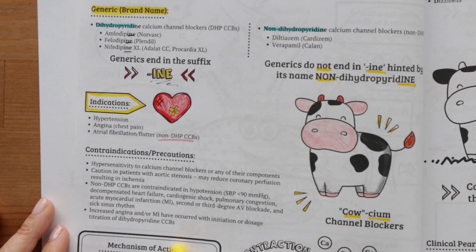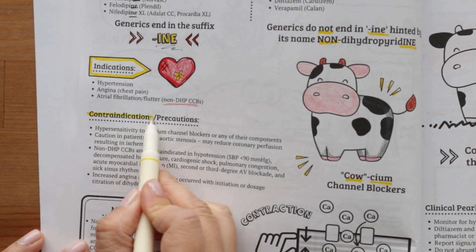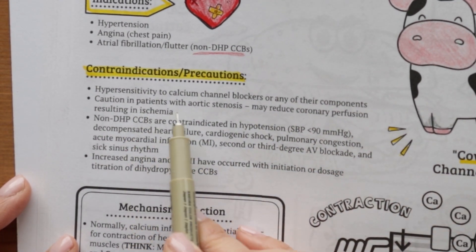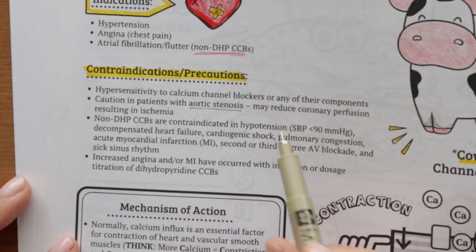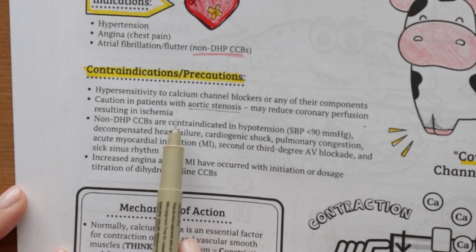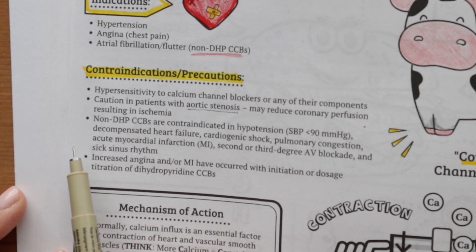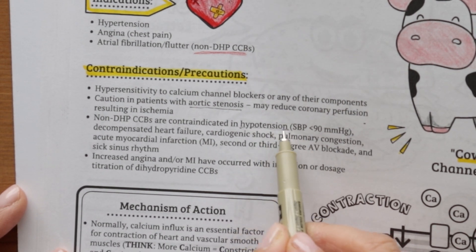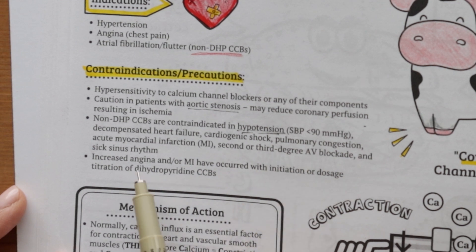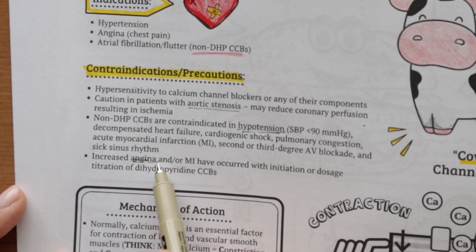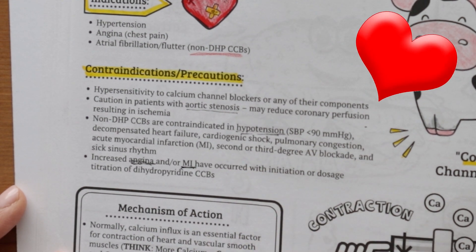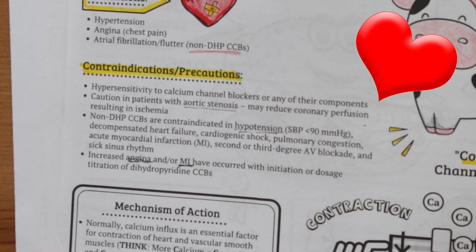Some contraindications and precautions to keep in mind: calcium channel blockers should not be used in patients with hypotension, decompensated heart failure, cardiogenic shock, pulmonary congestion, acute myocardial infarction, 2nd or 3rd degree AV block, and sick sinus syndrome. Basically, any condition where the heart is already having trouble perfusing or pumping.